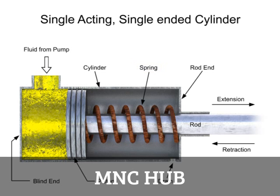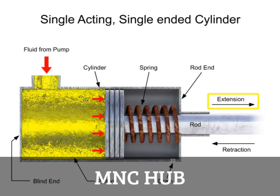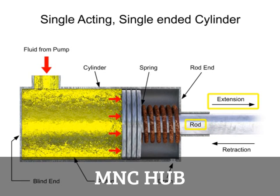A single-acting cylinder produces linear motion in one direction. When a control valve directs fluid through the inlet port into the blind end, pressure builds up and generates a force on the piston. When the pressure buildup is large enough, the piston begins to move, extending the rod. This is called the forward stroke.